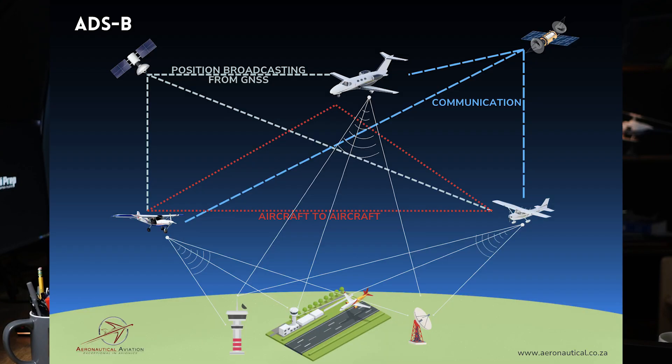ADS-B Out uses transmitters in the aircraft to send out data over a dedicated frequency, typically either 1090MHz or 978MHz, depending on international flights or use in the U.S. Ground stations receive these broadcasts, allowing ATC to track aircraft more accurately and efficiently than traditional radar and transponder codes.